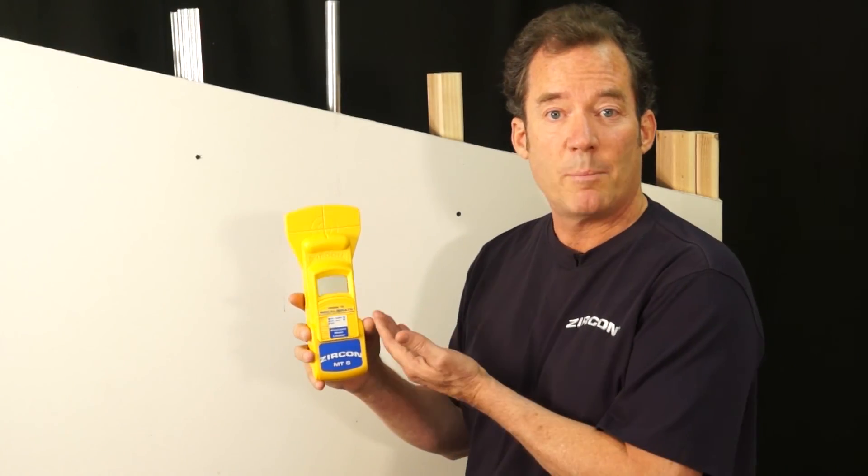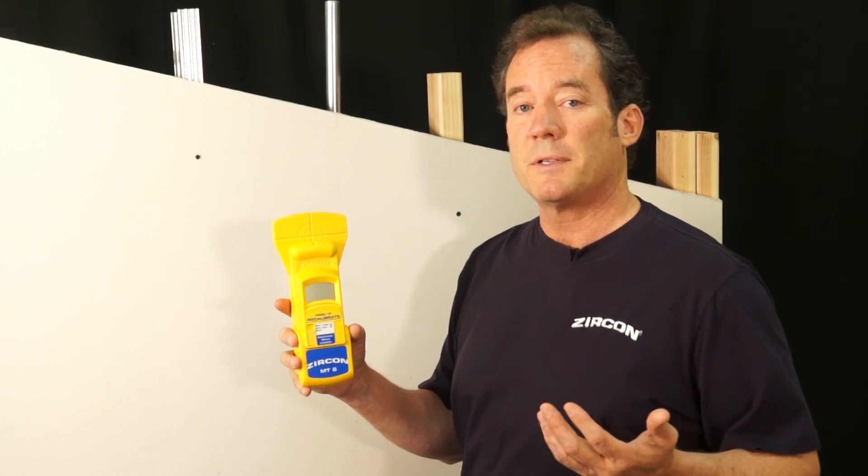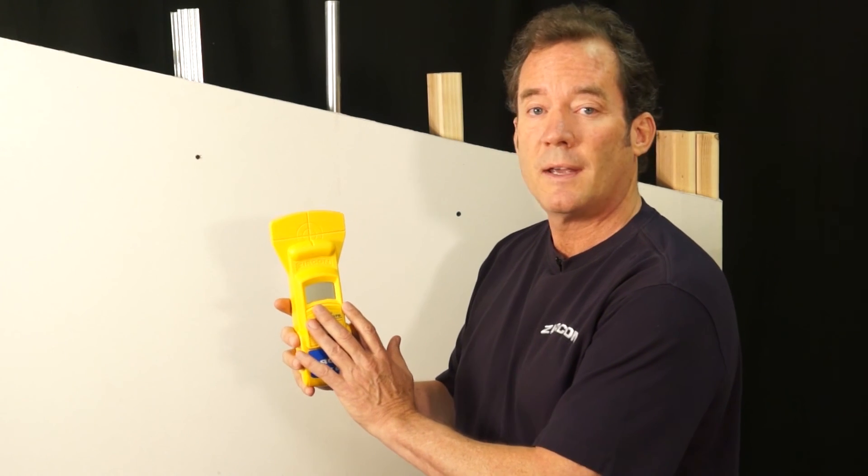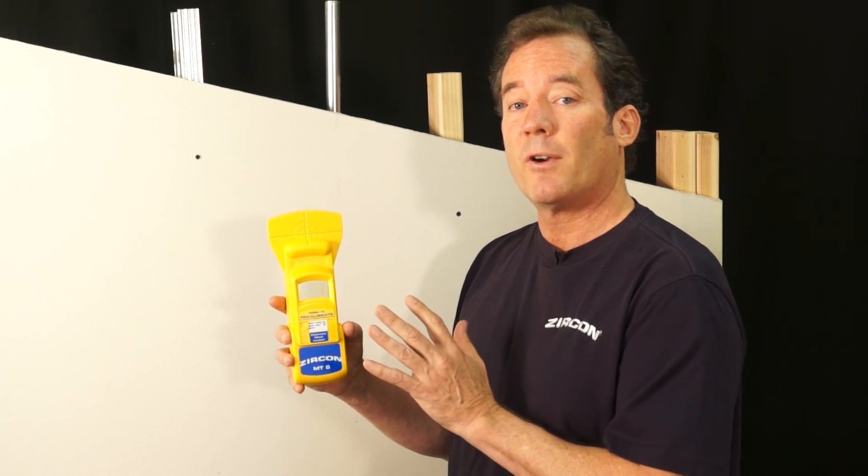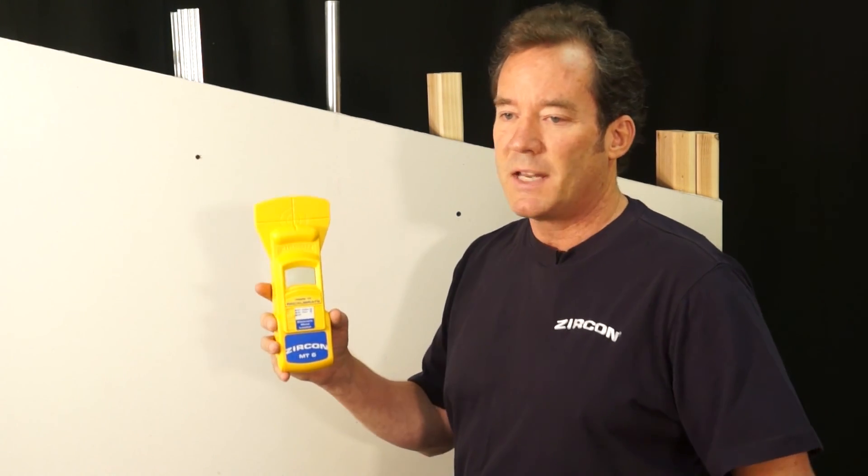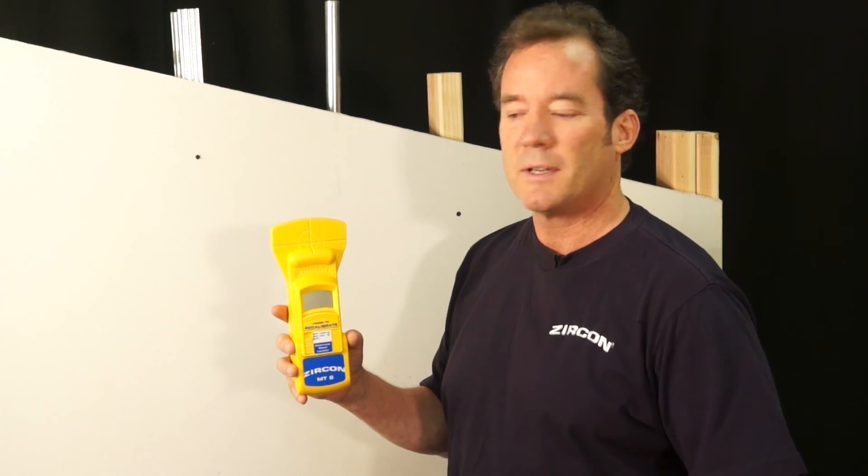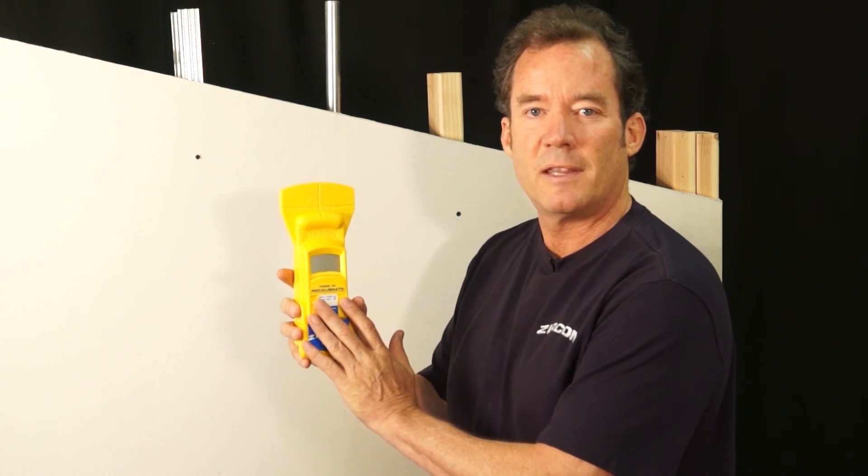So the main benefit of using MT6 over other metal detectors is that it's very simple to use, it's very accurate, and also it's very fast to use. Saving time is really important to a lot of users, and the MT6 seems to fit the bill for that.